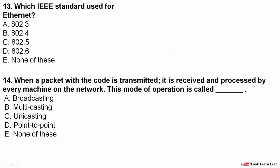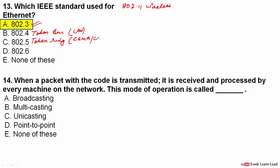Which IEEE standard is used for Ethernet? 802.3 is for Ethernet and 802.11 is for wireless LAN. Additionally, 802.4 is for token bus in LAN, 802.5 is for token ring, and 802.16 is for MAN — Metropolitan Area Network. Remember these key IEEE standards, especially 802.3 and 802.11.